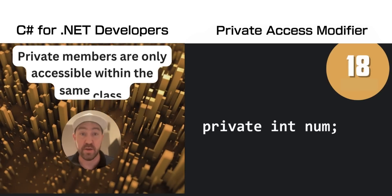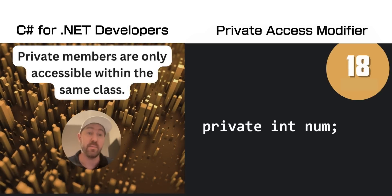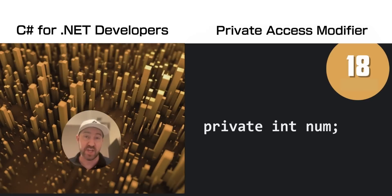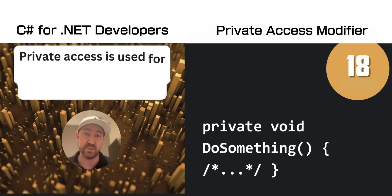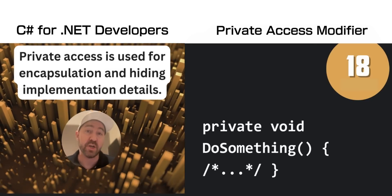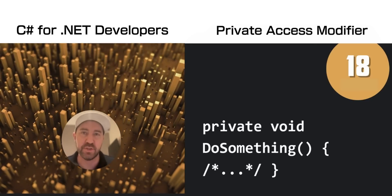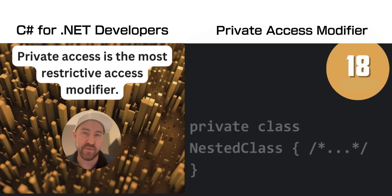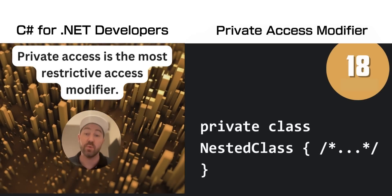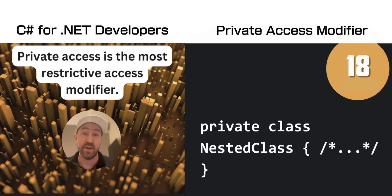Unlike public, the private access modifier means that this member is only accessible within the same class as itself. You tend to use it for encapsulation and hiding implementation details. Private is the most restrictive of all the access modifiers, so use it with care.